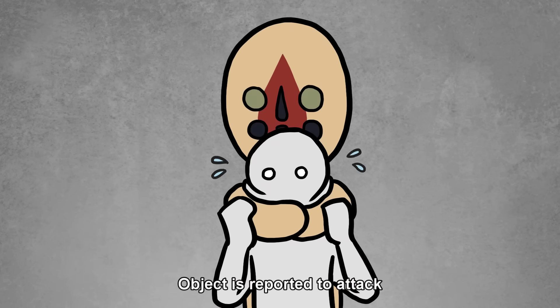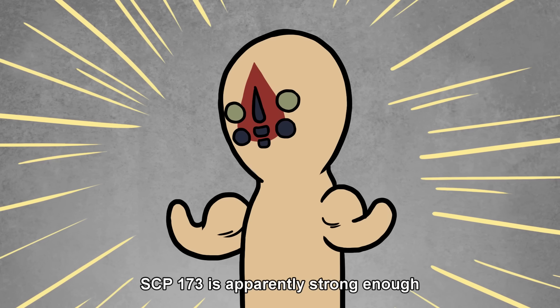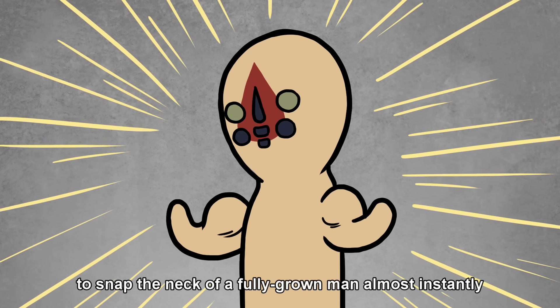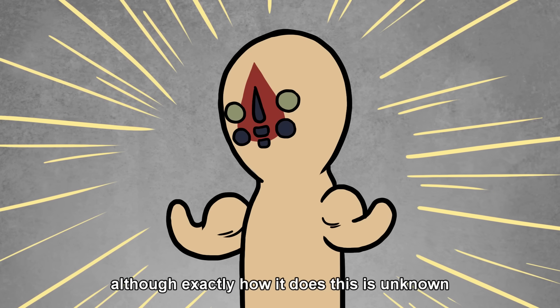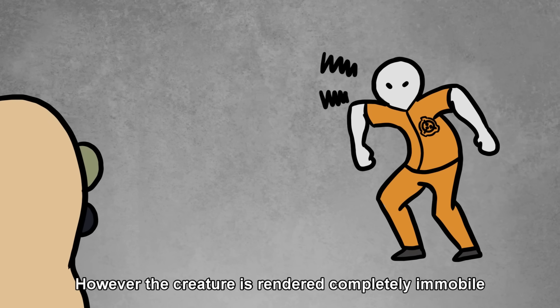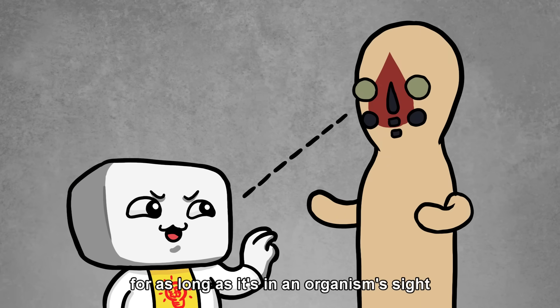Object is reported to attack by snapping the neck at the base of the skull, or by strangulation. SCP-173 is apparently strong enough to snap the neck of a fully grown man almost instantly, although exactly how it does this is unknown. However, the creature is rendered completely immobile for as long as it's in an organism's sight.